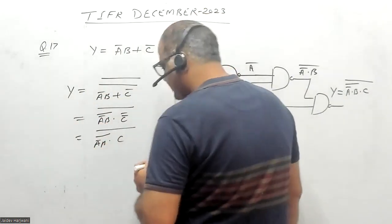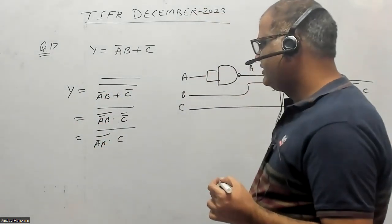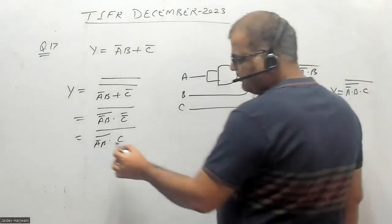Now everything is in the form of NAND gate. You can see you require one NAND gate to form A̅, so you can make A̅ like this.